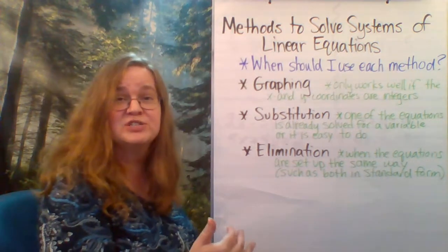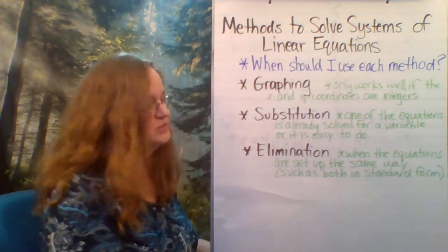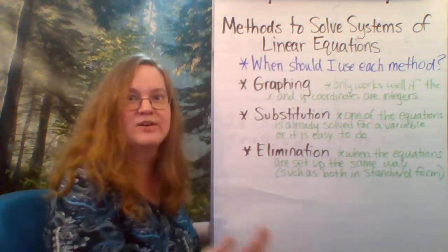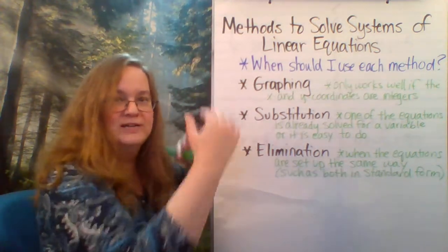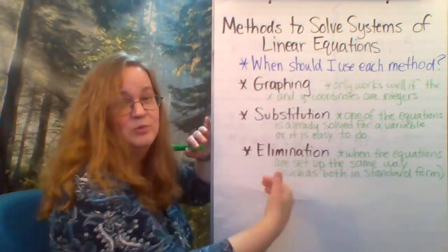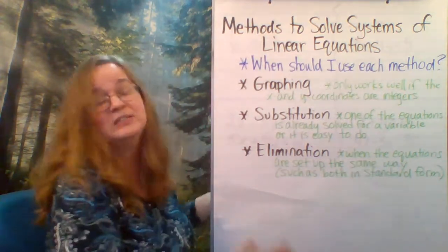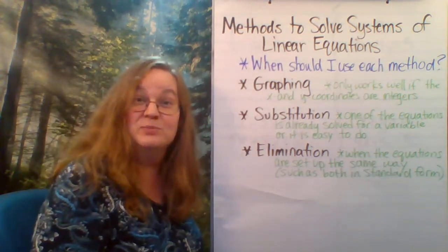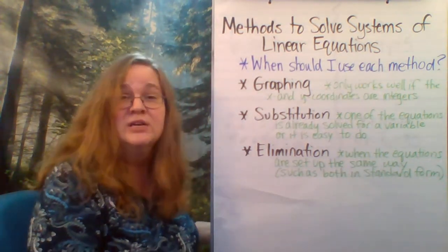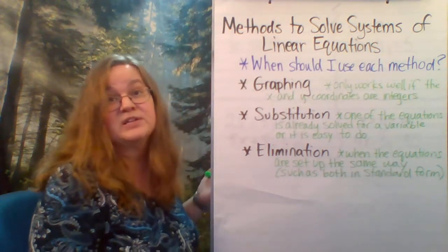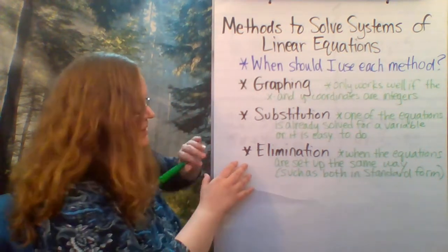Elimination, when you have your equations and they're set up exactly the same way. So let's say you have two equations in standard form. They're kind of all lined up. The x is lined up with the x and the y is lined up with the y and the constant is lined up with the constant. Elimination tends to be a pretty easy method to use. So let's just look at a few examples and what I would choose and why I would choose that particular method.